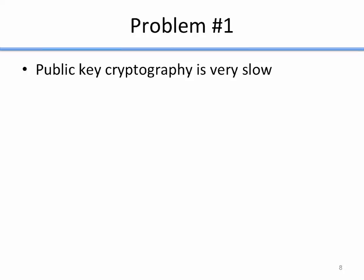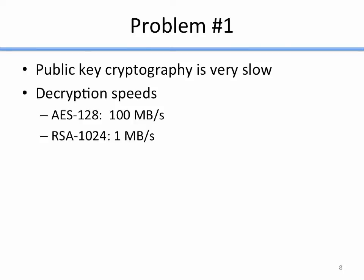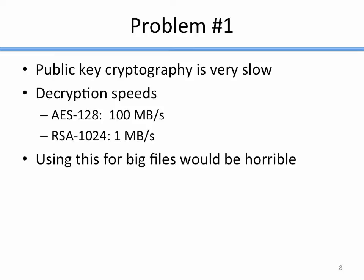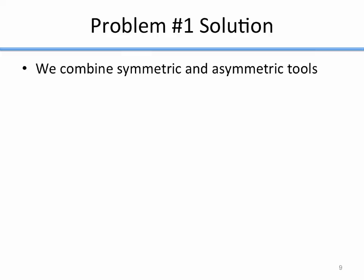There are some problems with this. Problem number one is that public key cryptography is very slow. For example, AES — a symmetric cipher — can encrypt at 100 megabytes per second or faster depending on hardware support. On that same machine, RSA is only 1 megabyte per second — 100 times slower. So if you have a 200-megabyte file, you can encrypt it with AES in 2 seconds, or with RSA in 200 seconds. A public key system is not good for large files.